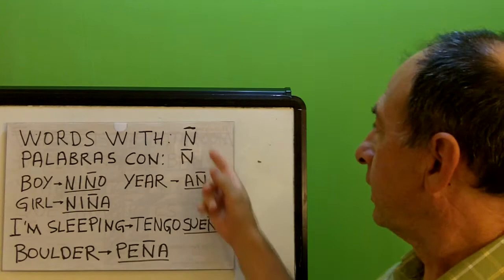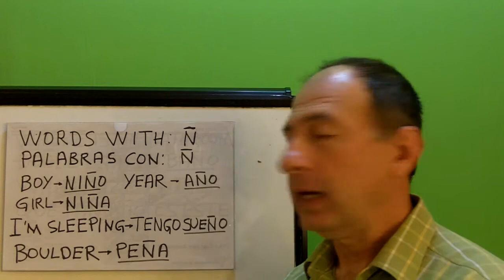Hi, welcome again to Spanish for All Trades. Today's video is going to be about how to pronounce words with EÑE. This is what we call EÑE in Spanish. We have EÑEs in Spanish — in English we don't have that.